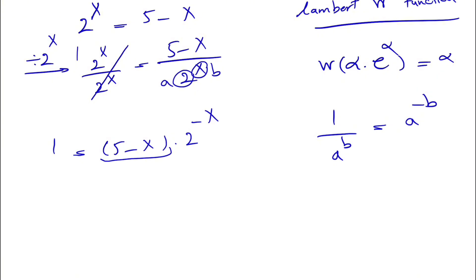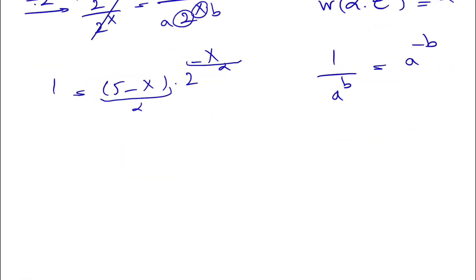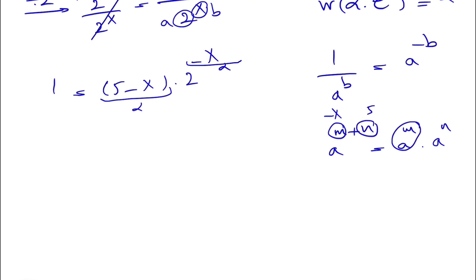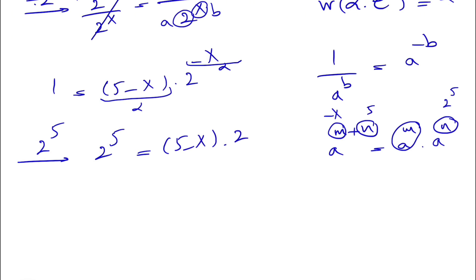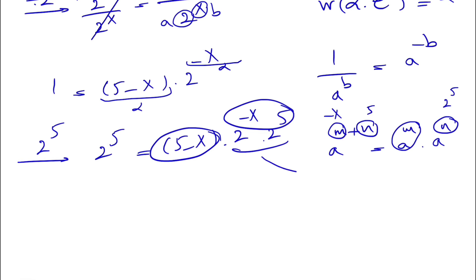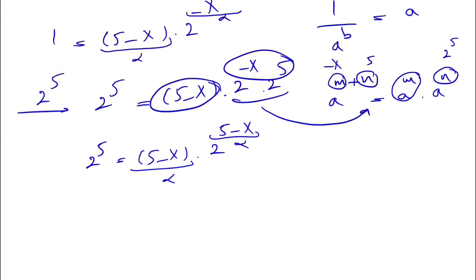The left side cancels out to 1. From the laws of exponents, 1 over a to the b equals a to the minus b, so with a equals 2 and b equals x, we get 1 equals 5 minus x times 2 to the minus x. We can see we're getting close to our Lambert W form — but the exponent needs to match the factor out front, so we multiply both sides by 2 to the 5, giving us 2 to the 5 equals 5 minus x times 2 to the 5 minus x.